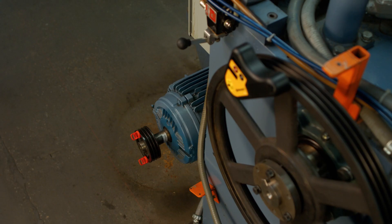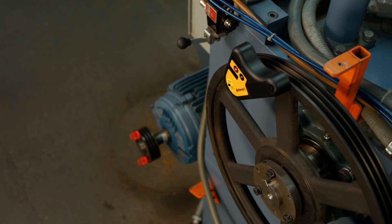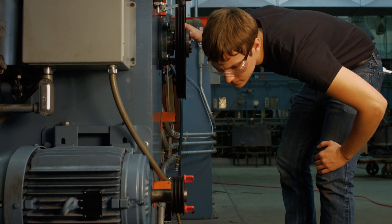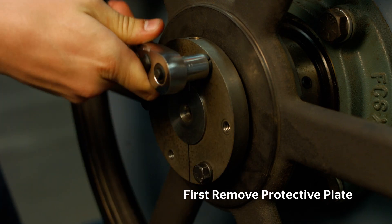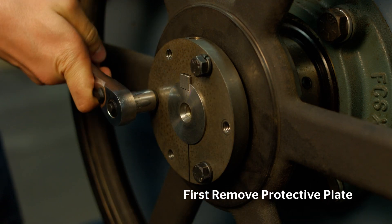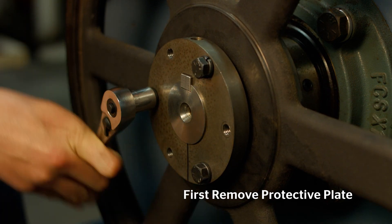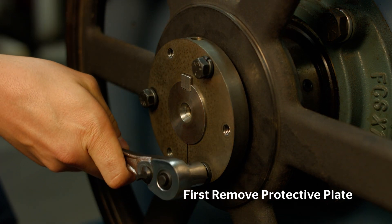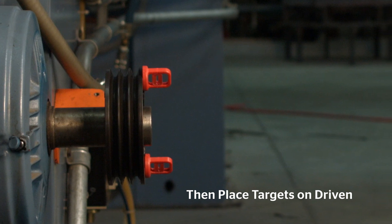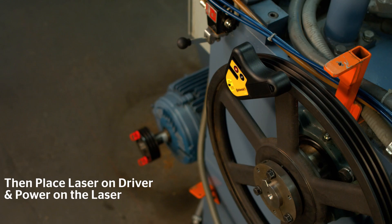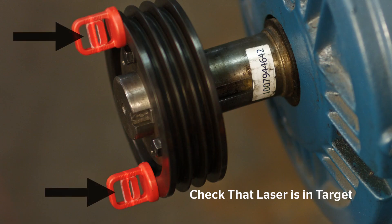With our laser alignment tool, you can quickly align drive components to improve efficiency and reduce costly maintenance. First, remove the protective plate. Then, place targets on the driven. Place the laser on the driver and power on the laser. Check that the laser is within the targets.